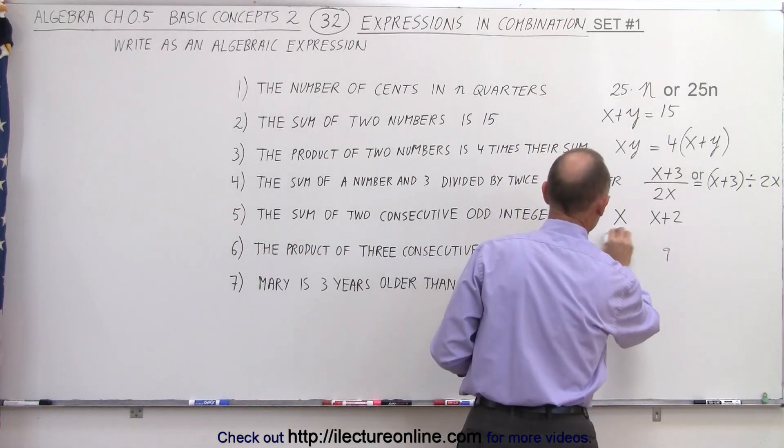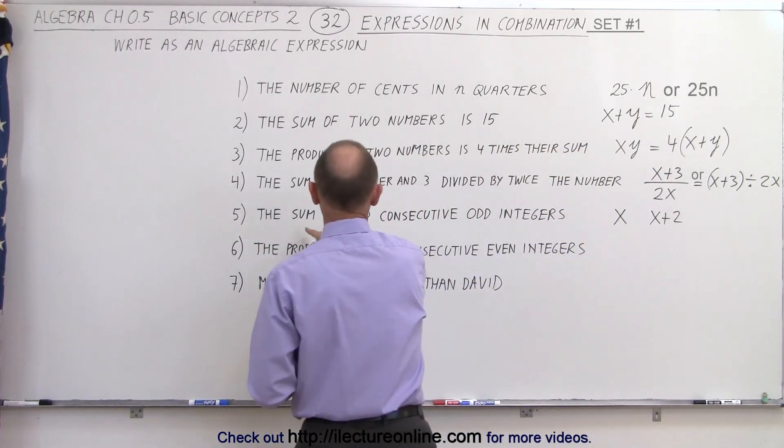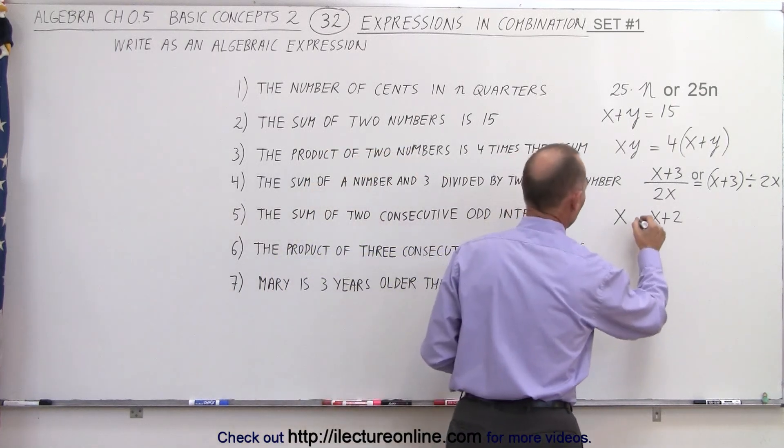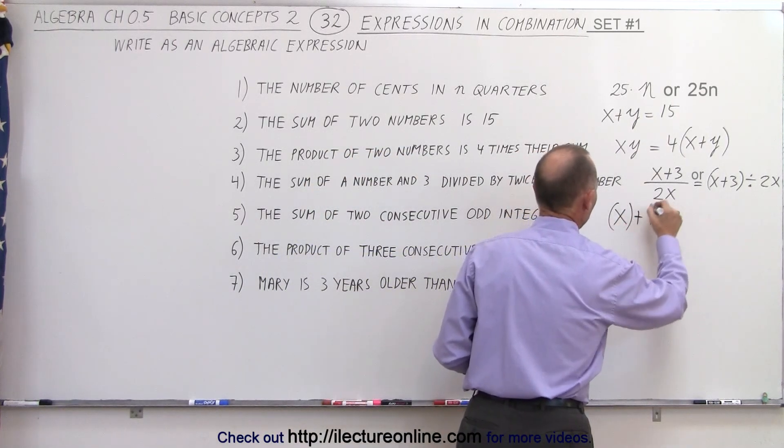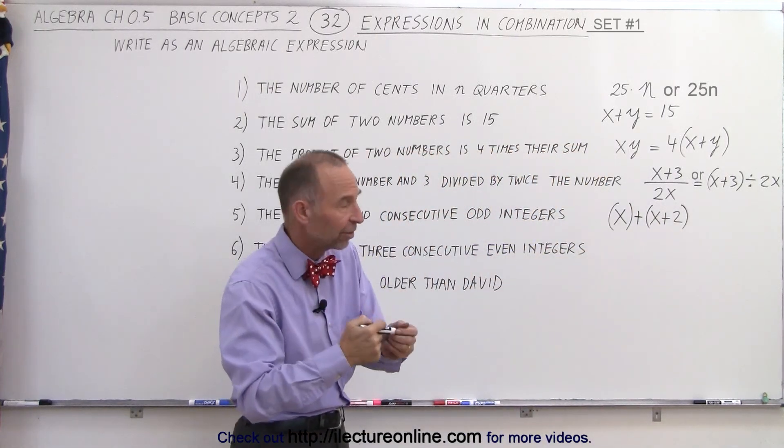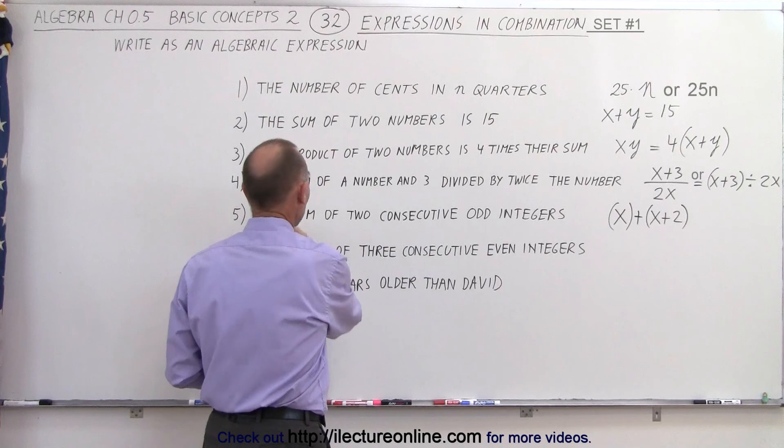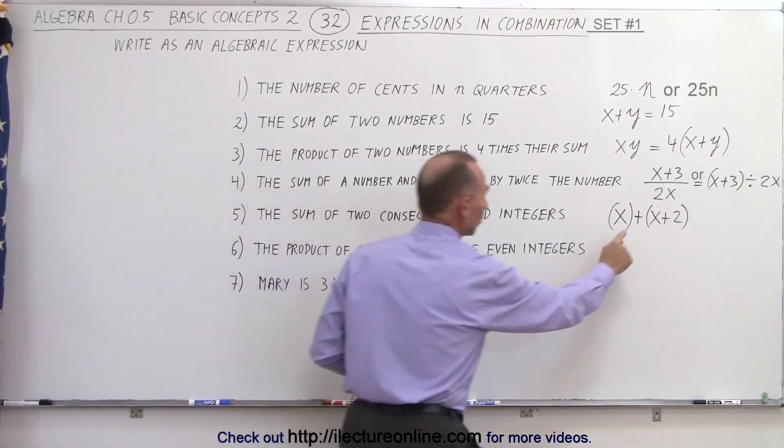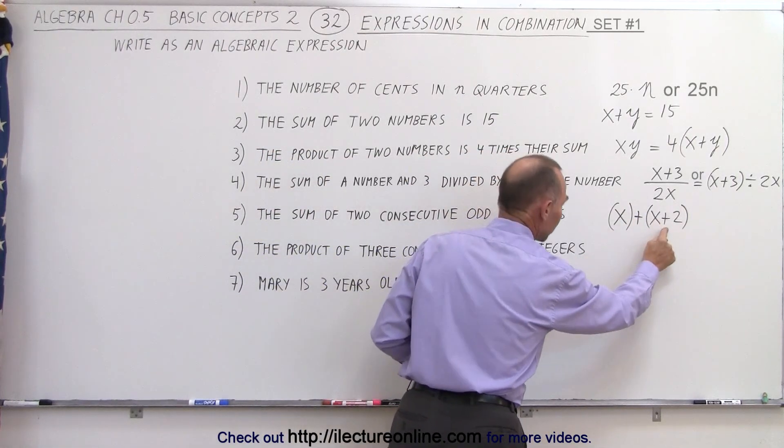Now what are we supposed to do with them? It says the sum of the two. So that means x plus x plus two. I don't have to write the parentheses, but at least it makes it a little bit more clear. So we have the sum of two consecutive odd integers, the sum of x and x plus two.